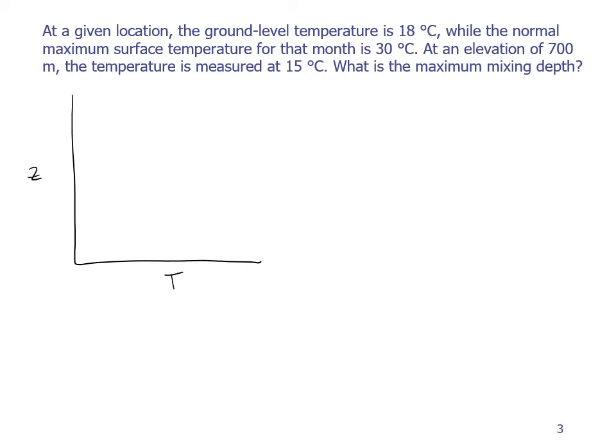So for the environmental lapse rate, our dT/dz of the environment at ground level is at 18 degrees Celsius. And then at a height of 700 meters, it's 15 degrees Celsius.